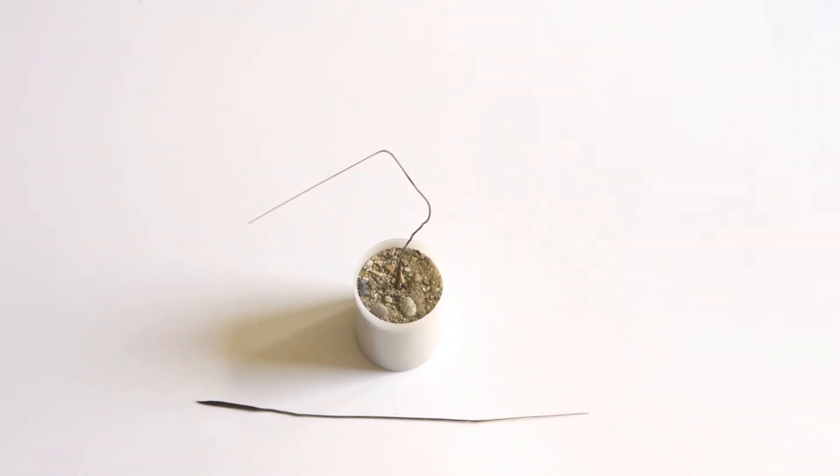When the seed gets wet, the awn spins in the opposite direction and tries to straighten out.